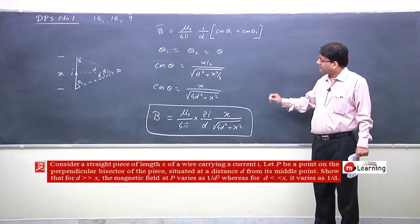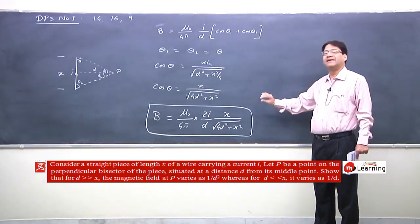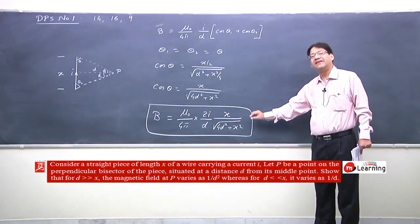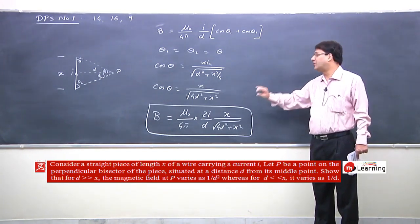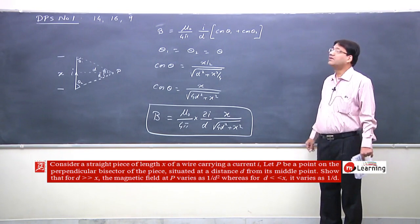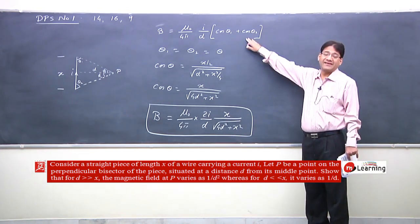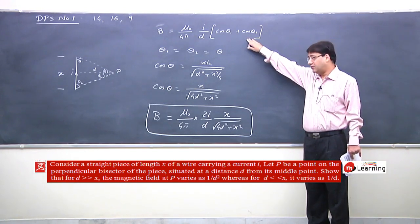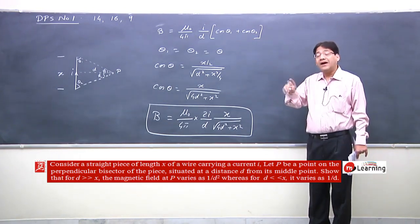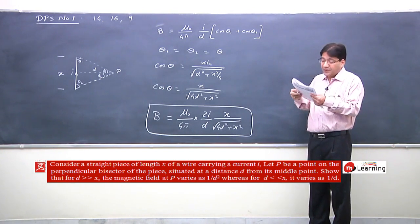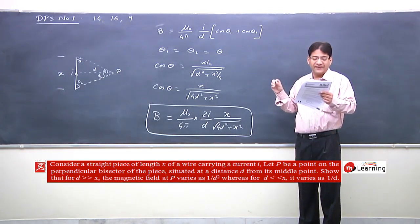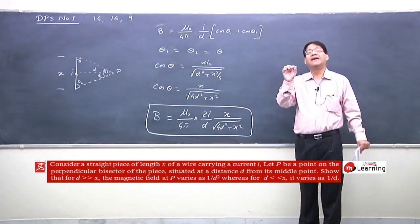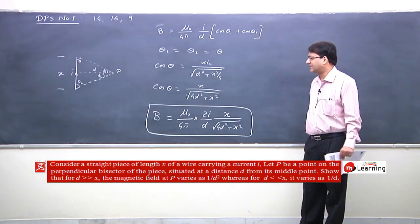First we obtain this generalized expression, which holds for any value of x and d. Now applying the given conditions: if d is very very large as compared to x, or if d is very very small as compared to x, we obtain the respective expression for magnetic field and prove the proportionality.